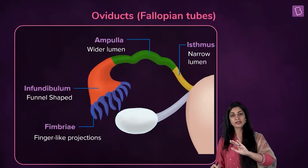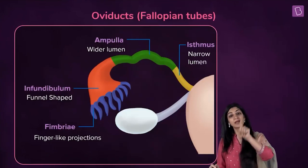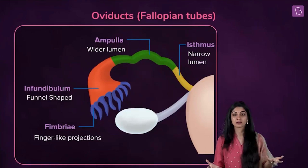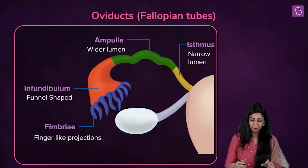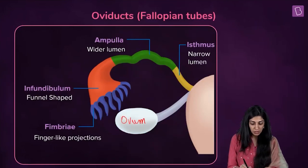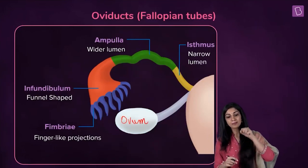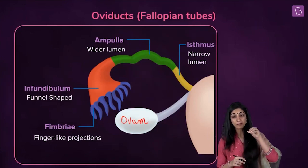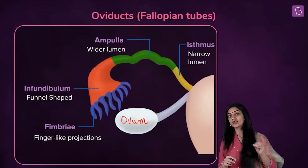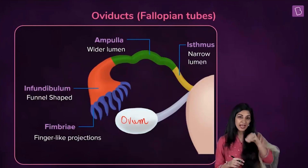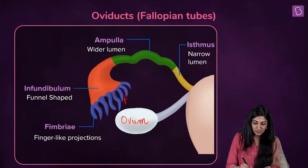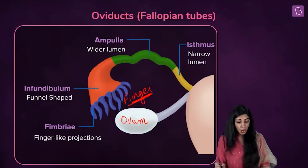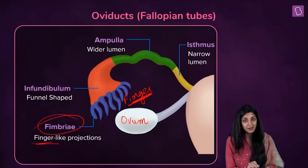First you will listen, then you will pick up your pens — ma'am always repeats, and that is when you write. Now, the ovary is going to produce the ovum. We want something to trap the ovum, to catch it. Broadly we said it is the fallopian tube, but which part catches it? Finger-like projections called fimbriae.